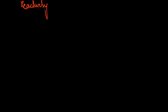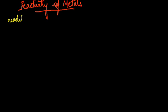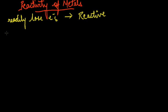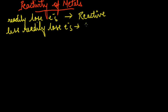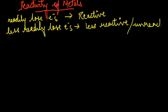I will be starting now with reactivity of metals. As I have already told, metals have the ability to lose electrons. They lose electrons and they form stable ions. Now, all the metals react to a different extent. Those metals which readily lose electrons are said to be more reactive, and which lose electrons less readily, you can say them to be less reactive or unreactive.